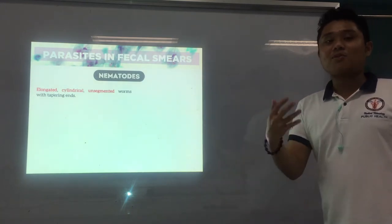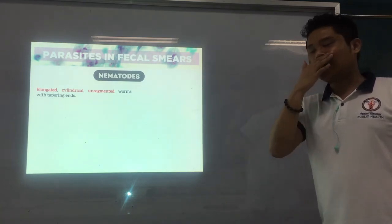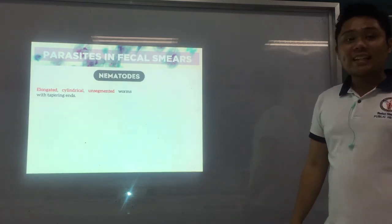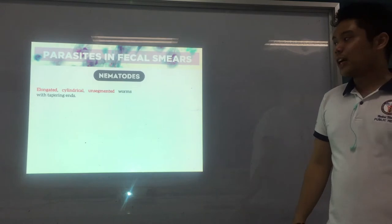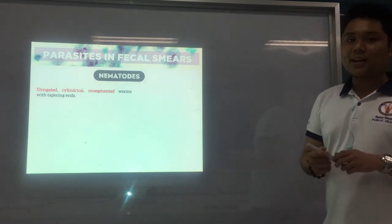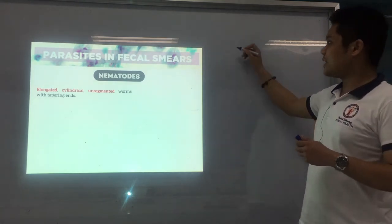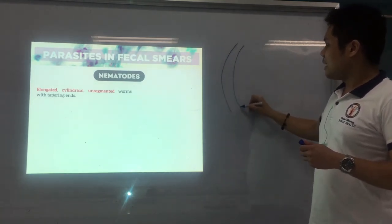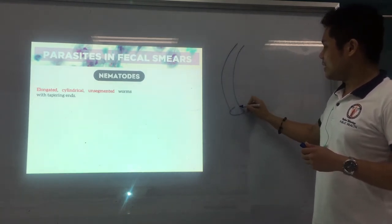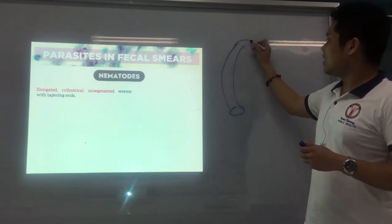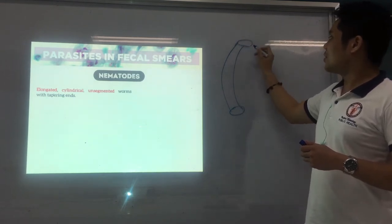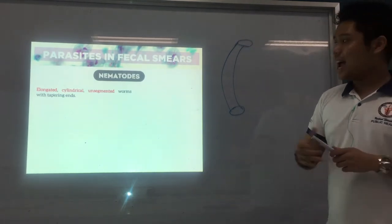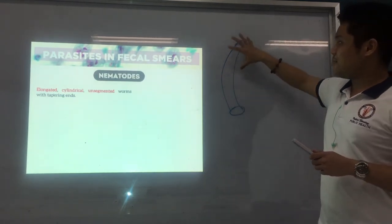We'll start first with the nematodes. First, they are elongated, cylindrical, unsegmented worms — the surface of the worms is smooth, no segments, with tapering ends.